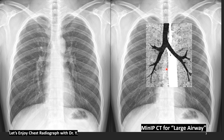This image is a MinIP projection of chest CT, which means Minimal Intensity Projection. That means the lowest Hounsfield unit of air is black, so it can easily show us the large airways. Here is the trachea, right main bronchus, apical bronchus, bronchus intermedius, right middle lobe bronchus, lower bronchus, and left main bronchus.